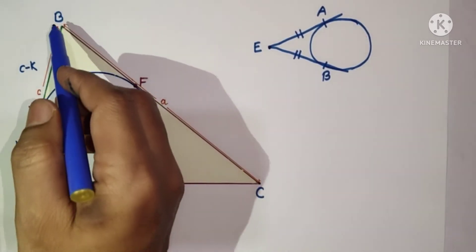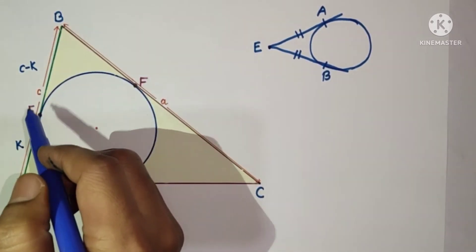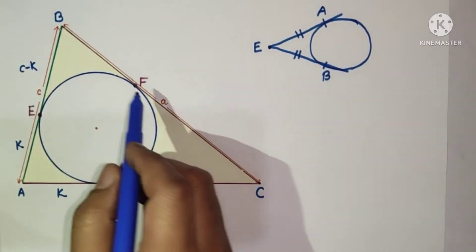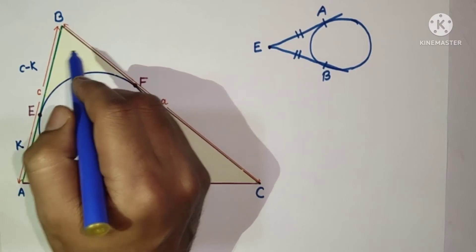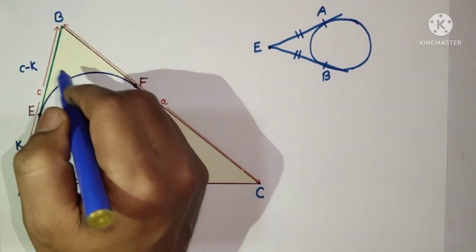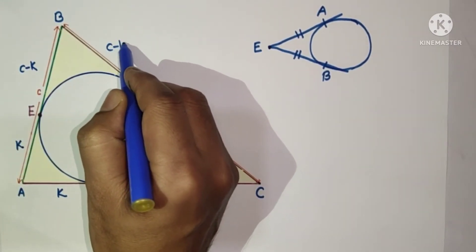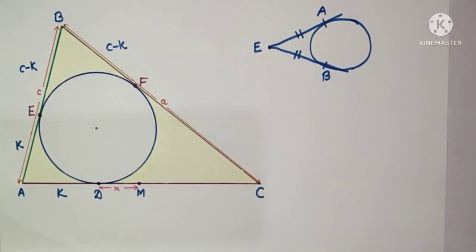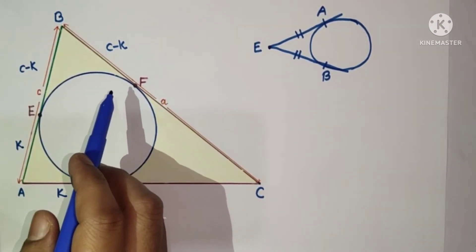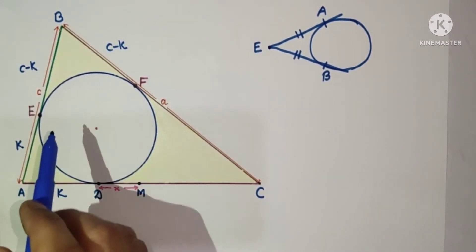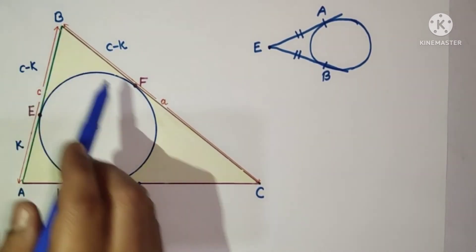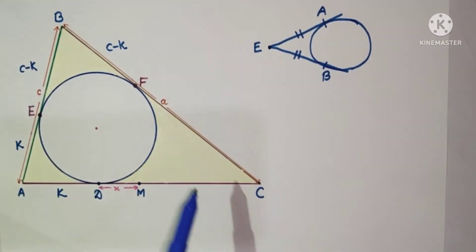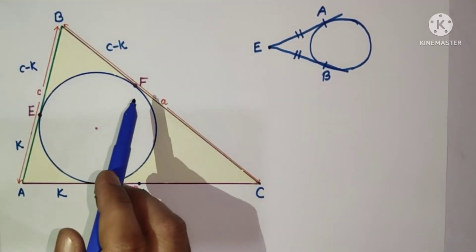We know that BE equals BF by the tangent equality property, so BF is also equal to c minus K. The whole side length BC equals a.